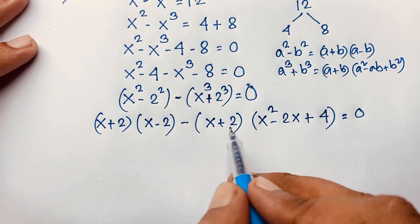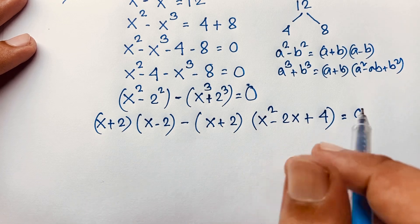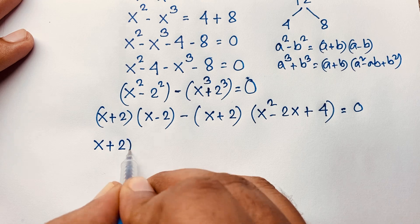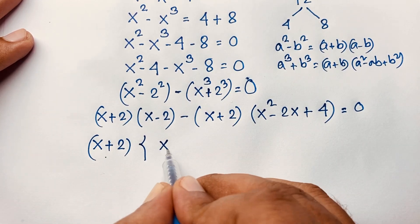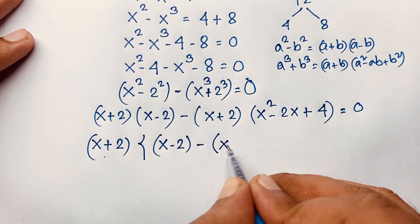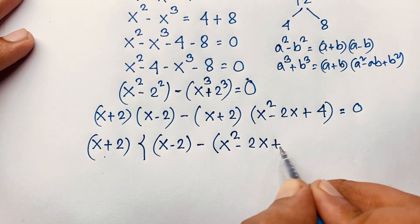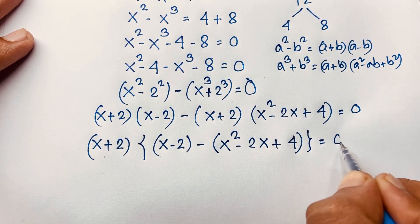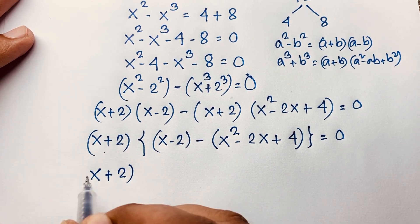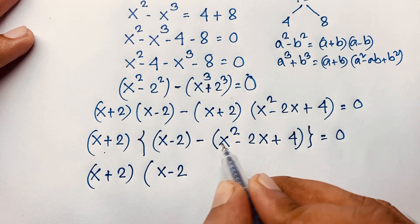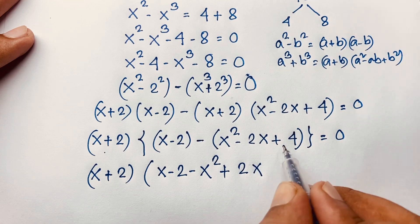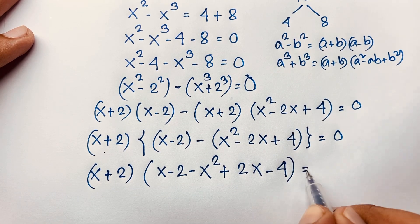Here we see x plus 2 appears in both terms — x plus 2 is common. Taking x plus 2 as the common factor and dividing, the first part becomes x minus 2. With the negative sign, the second part becomes negative of x squared minus 2x plus 4, which gives x plus 2 times x minus 2 minus x squared plus 2x minus 4, equal to 0.